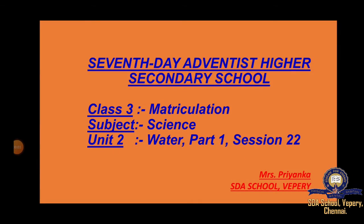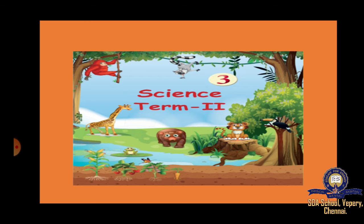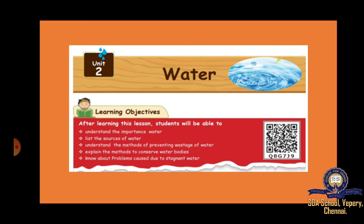Hello children, a very good afternoon to you all. Welcome back to the next session of online class. Today's topic is Science, Unit 2, that is Water. Unit 1, Food, we have finished successfully. Now Unit 2 is Water. In this lesson, we are going to learn the importance of water, the sources of water, methods of preventing wastage of water, methods to conserve water bodies, and problems caused due to stagnant water. These are the main topics we are going to discuss in this unit. Let's go into the lesson.